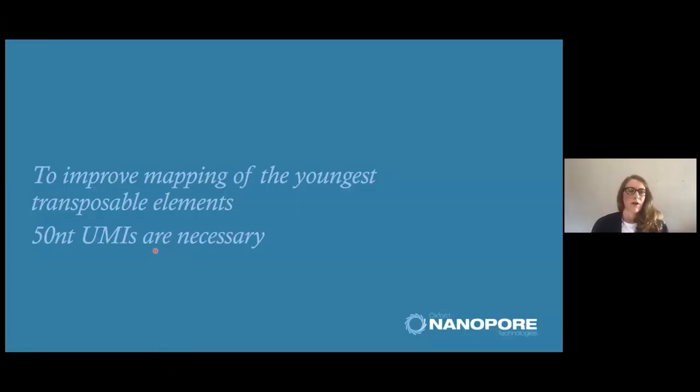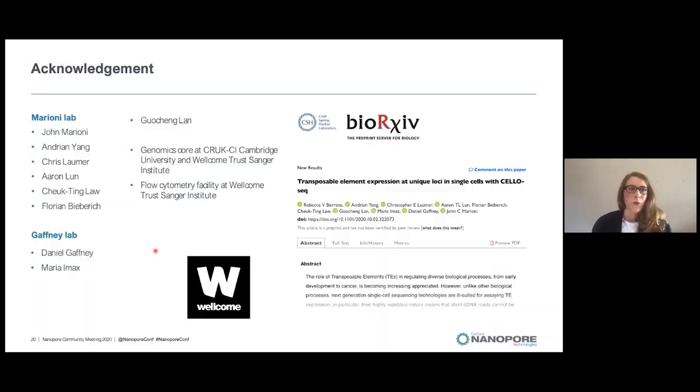In total, we want to advocate that in order to improve mapping of the youngest transposable elements, a 50 nucleotide UMI is necessary. And so far, no Nanopore single cell RNA-seq libraries are present to produce libraries with 50 nucleotide UMI. With this, I want to acknowledge the people who have done the work.